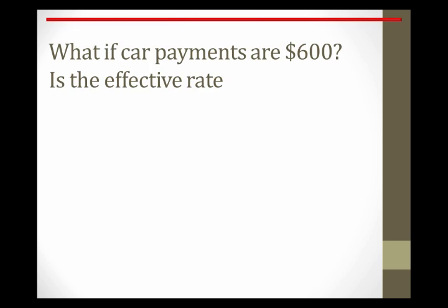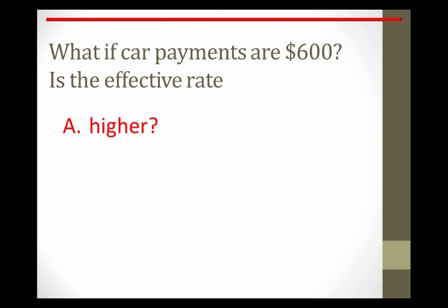Let's use our intuition to see what would happen if we changed something in this example. What if the car payments are $600? Everything else is the same: $20,000 loan, 5 years, but payments of $600 — what does that imply about the cost of financing? The effective annual rate would be higher because we're making larger payments. The monthly rate, calculated in Excel, would be 2.18%.